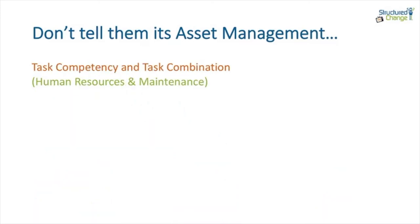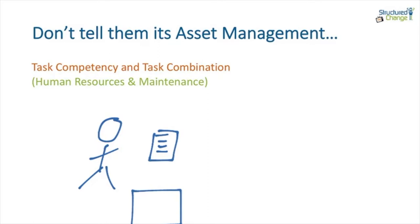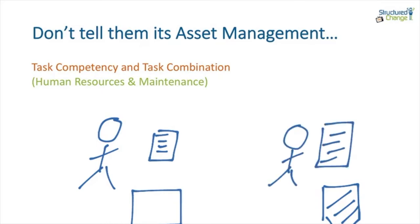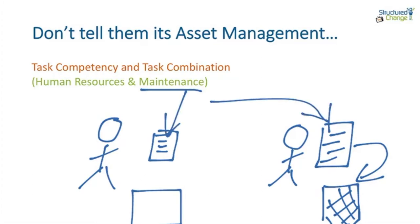The next element in asset management often overlooked is competency. If an individual is doing a task on a particular asset and we change that asset so it looks different, the tasks need to be done differently because the equipment is actually different. The management of task competency is done by human resources, but the actual definition of what the task needs to do will be defined by reliability and maintenance. This reminds us that HR and maintenance need to work together to establish what good looks like in terms of standards.